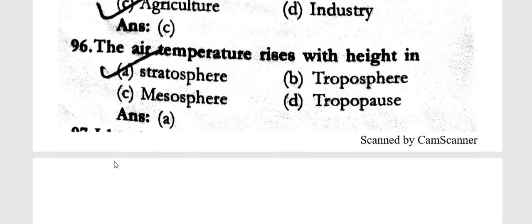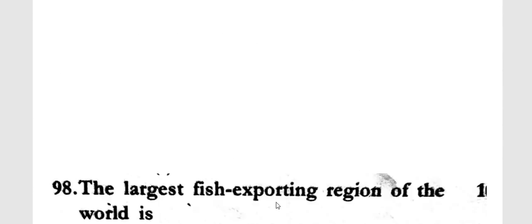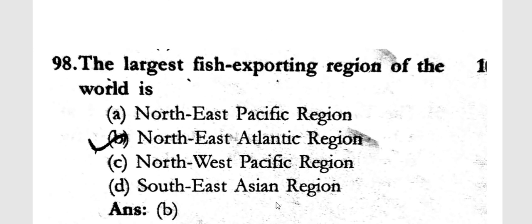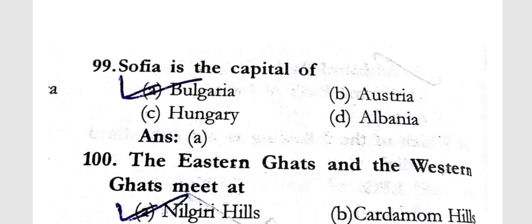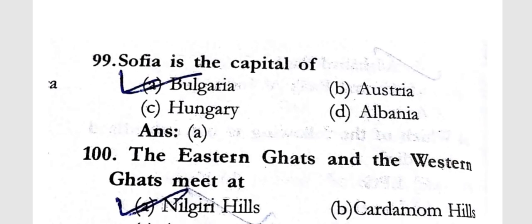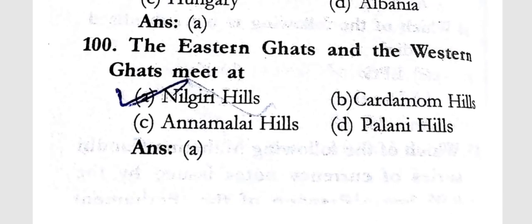In the stratosphere, air temperature rises with height. The largest fish exporting region of the world is the North East Atlantic region. Sofia is the capital of Bulgaria.